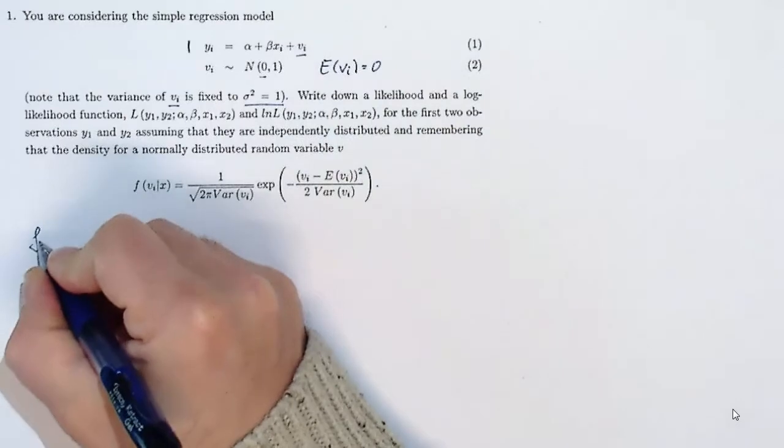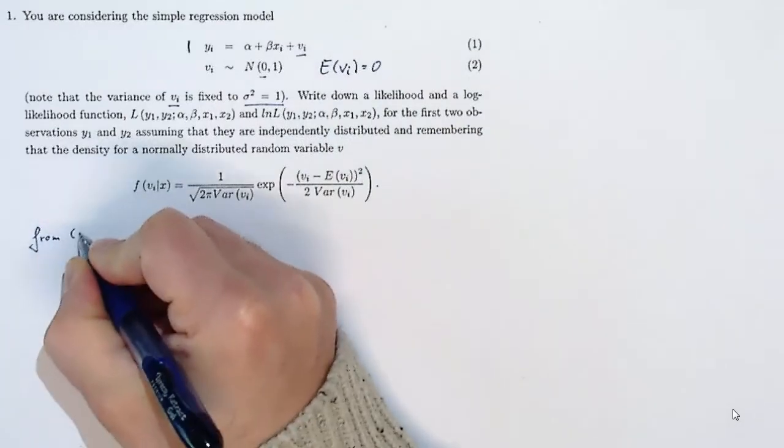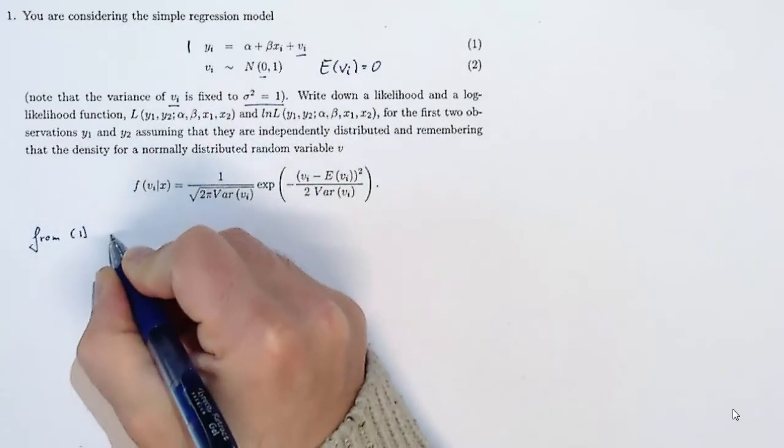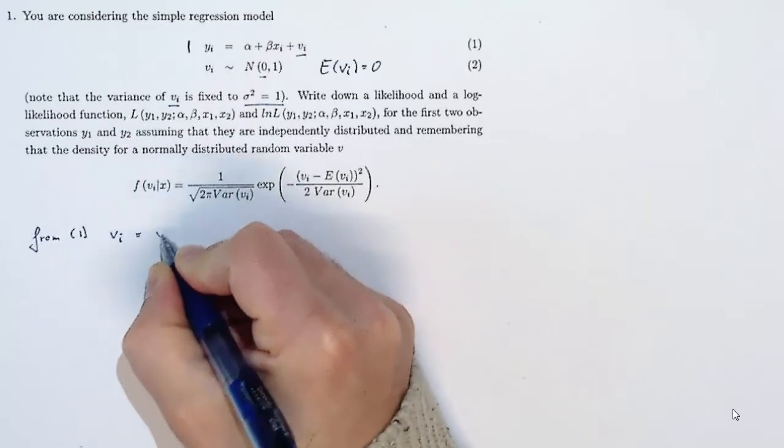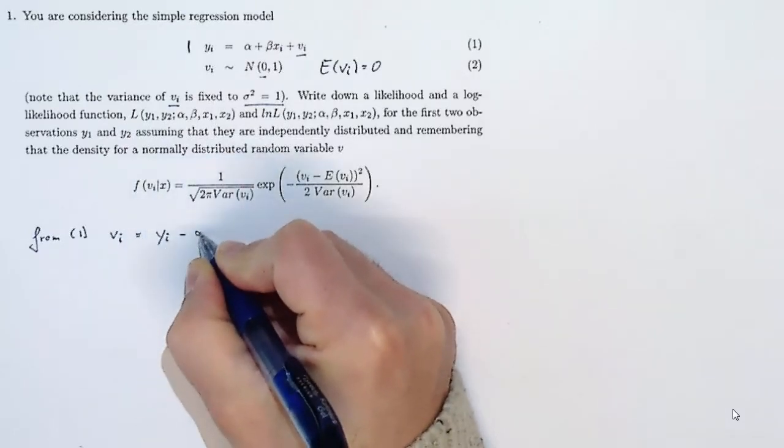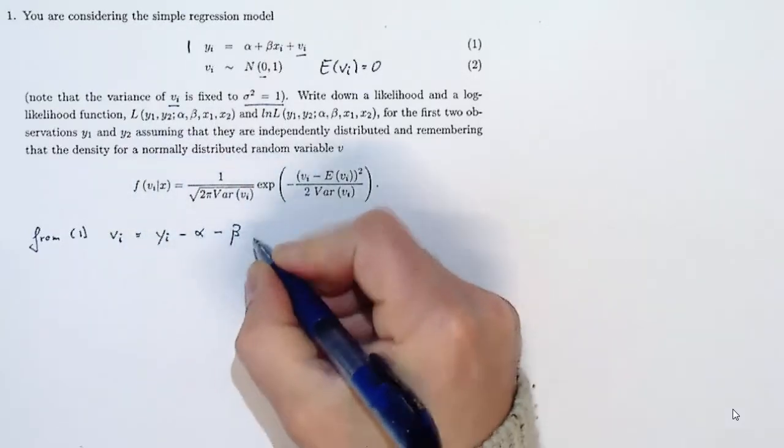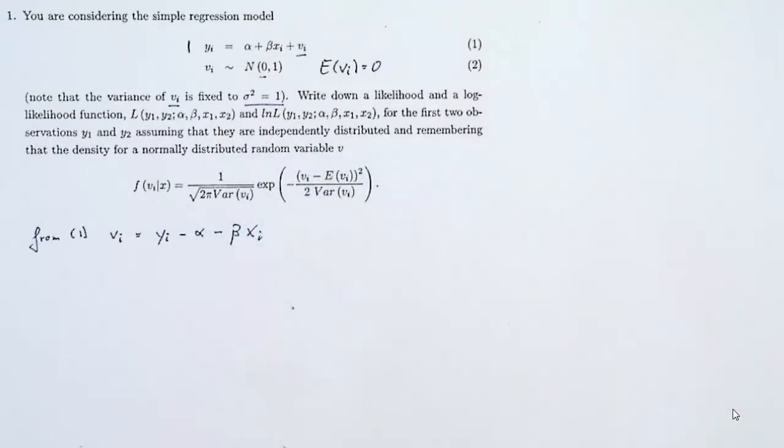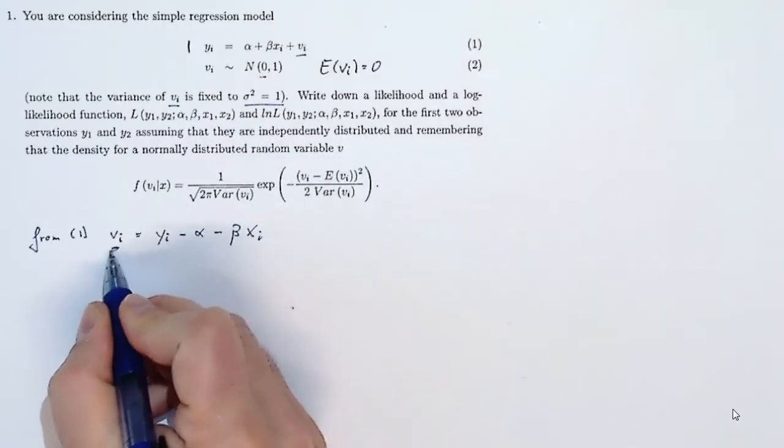From model 1, we can solve for the error term, which will be useful: yi minus alpha minus beta times xi. That is useful because yi is what we have a distribution for—that's our random variable.